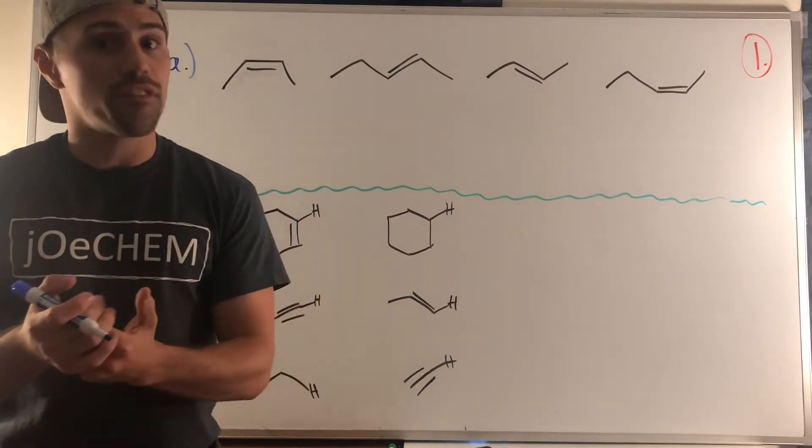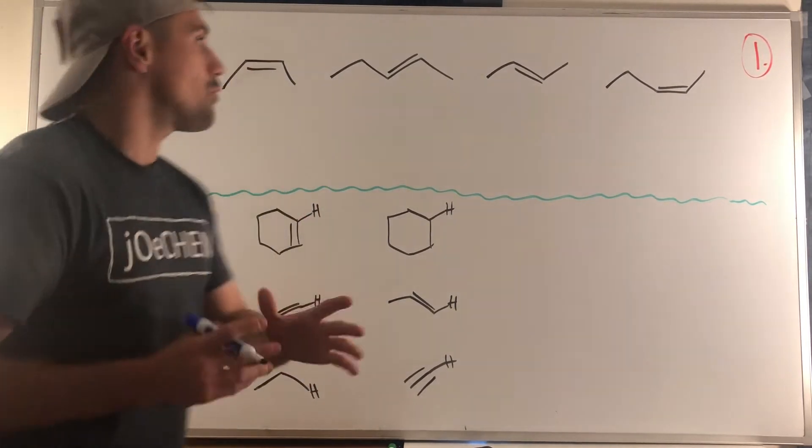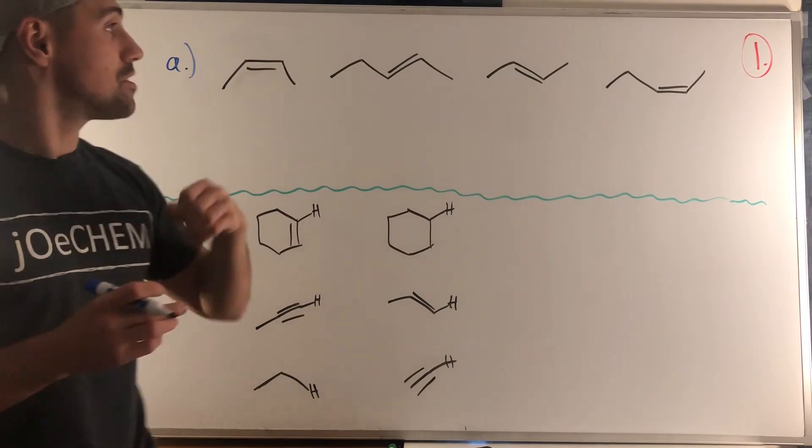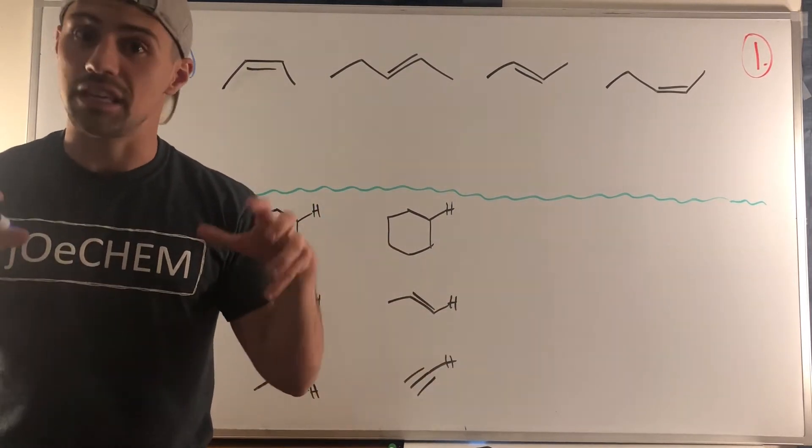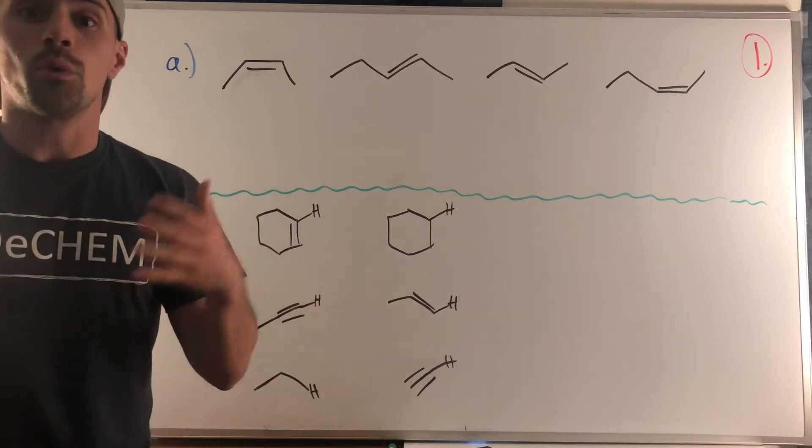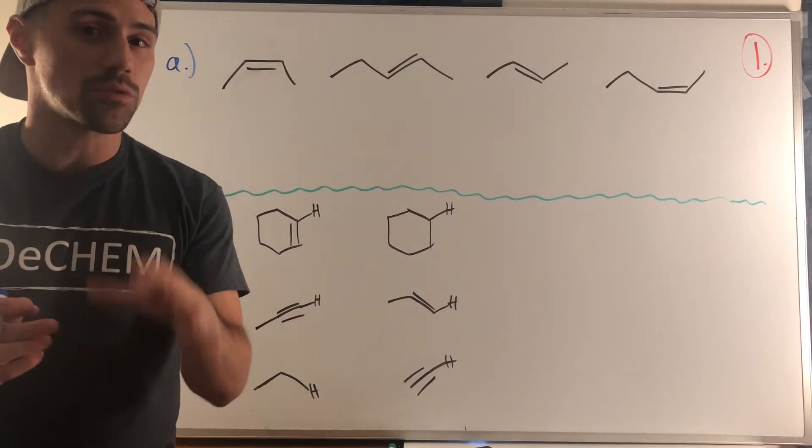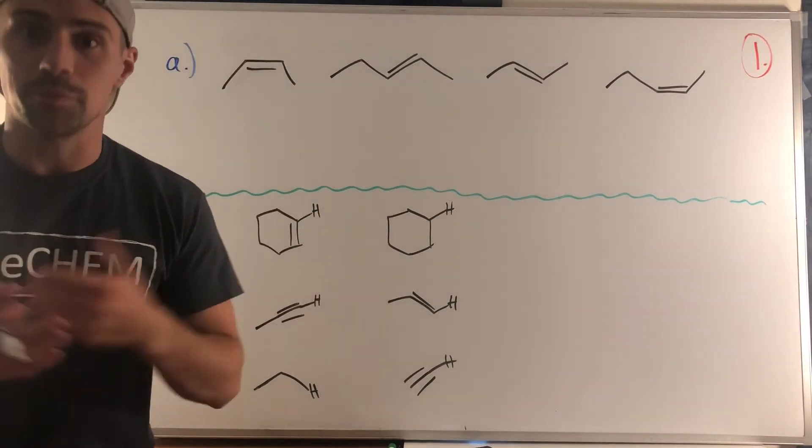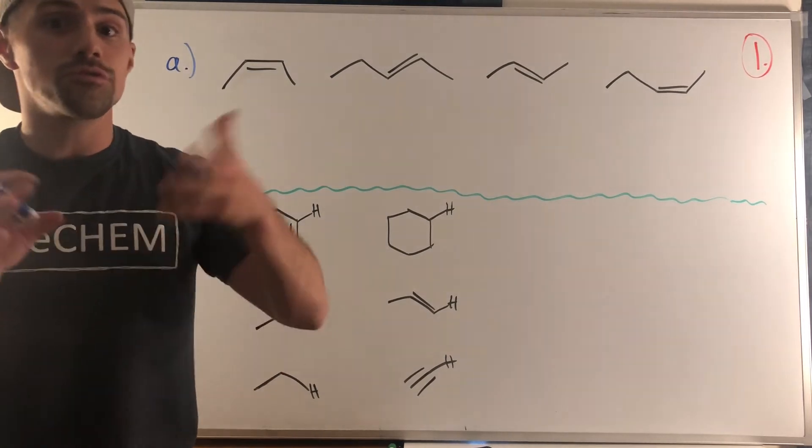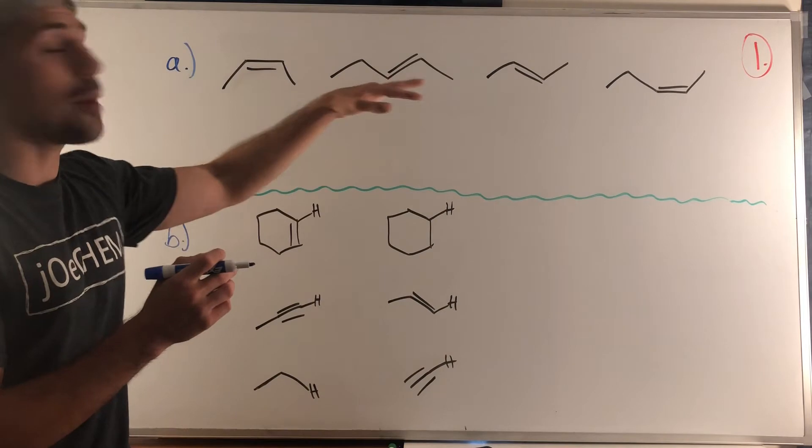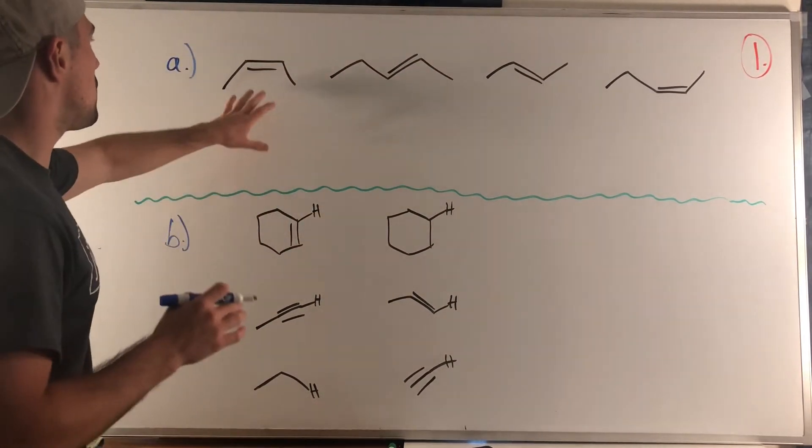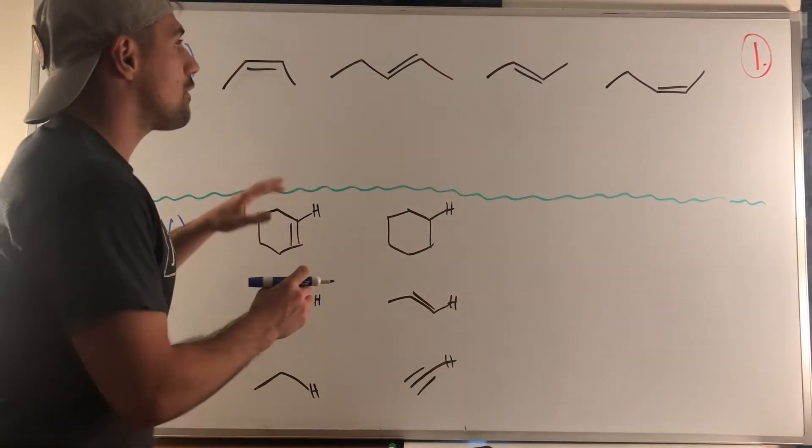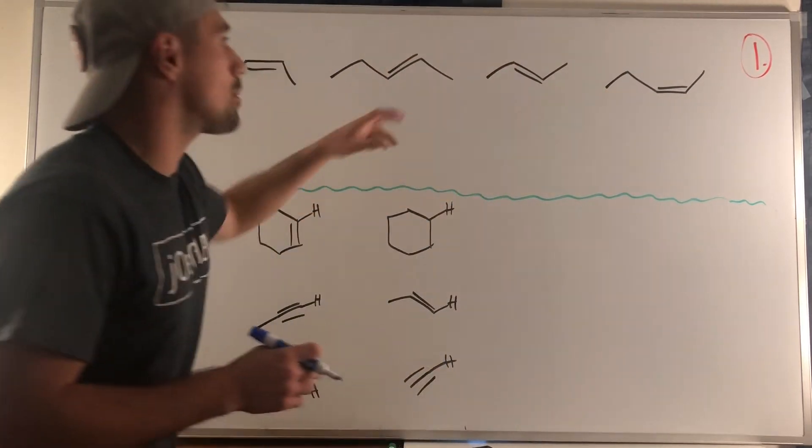Those are things like dispersion forces, dipole effects, hydrogen bonding if applicable. Because this is purely an alkene, the only functional groups we have are double bonds. We're dealing with dispersion forces, but we also talked about how with a tie in terms of molecular weight and dispersion forces, cis versus trans can create a little bit of a dipole effect.